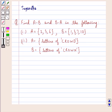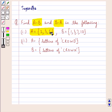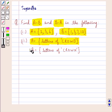Hello and welcome to the session. In this session we discuss the following question: find A minus B and B minus A. First, set A is equal to the set containing the elements 2, 3 and 6, and set B is the set containing the elements 1, 3, 7, 10. In the second part, A is the set of letters of the word 'crowd' and B is the set of letters of the word 'crown'.